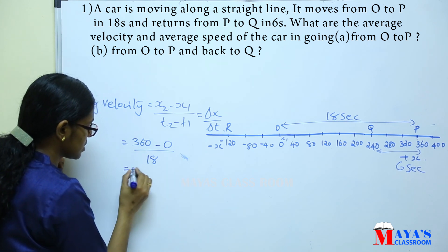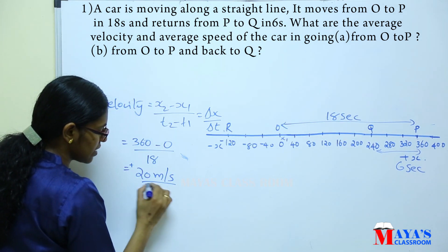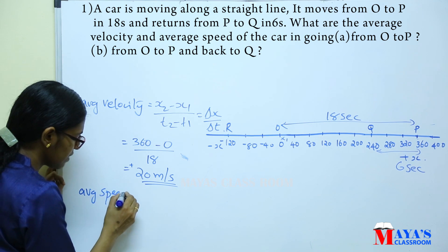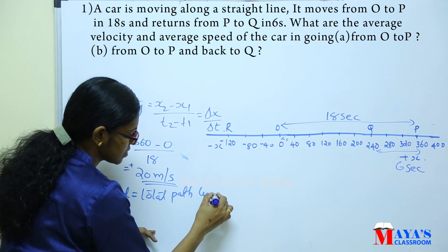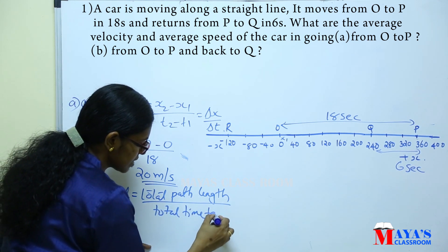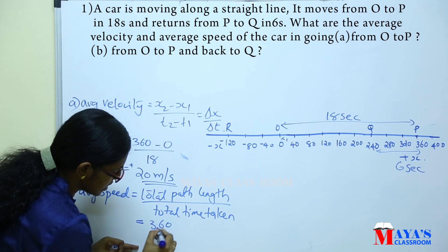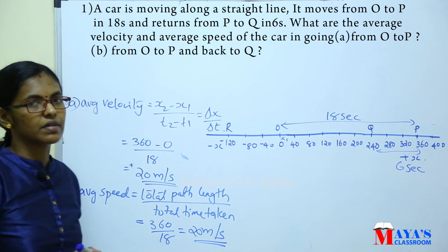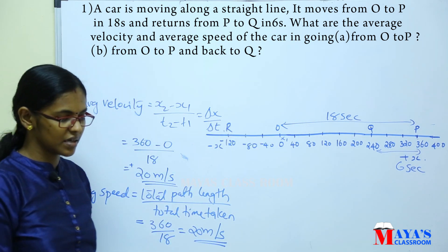That is equal to 20 meters per second in the positive x direction — positive velocity, positive value. Average speed is total path length divided by total time taken, which is also equal to 20 meters per second. So average speed equals average velocity for O to P.